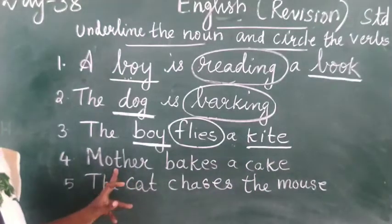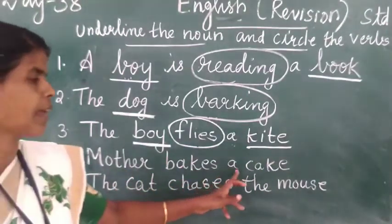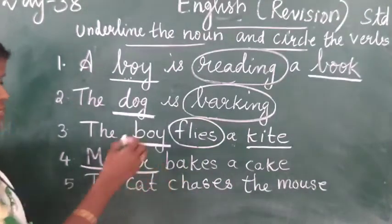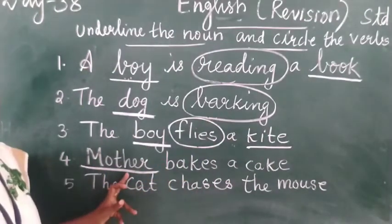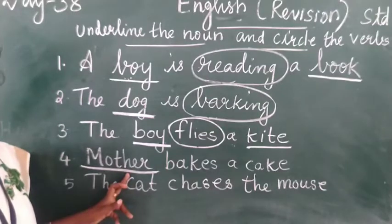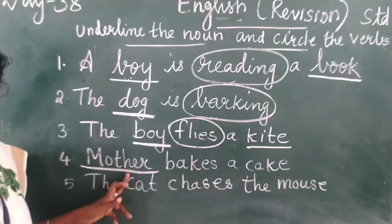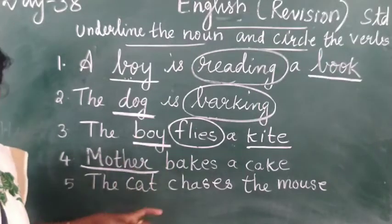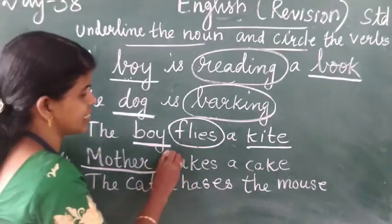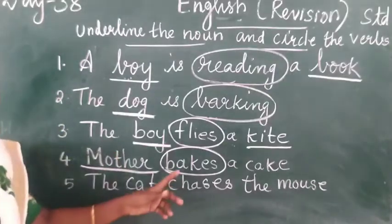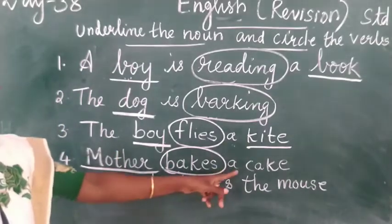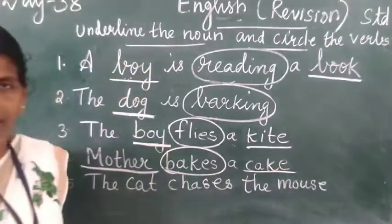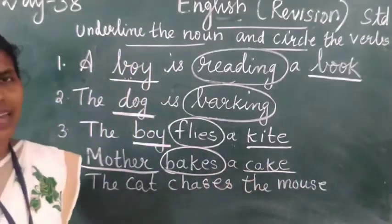Next, fourth sentence: Mother bakes a cake. Mother is the name of a person — that is a noun. Bakes is the action word — that is the verb. Cake is the name of a thing — that is a noun.